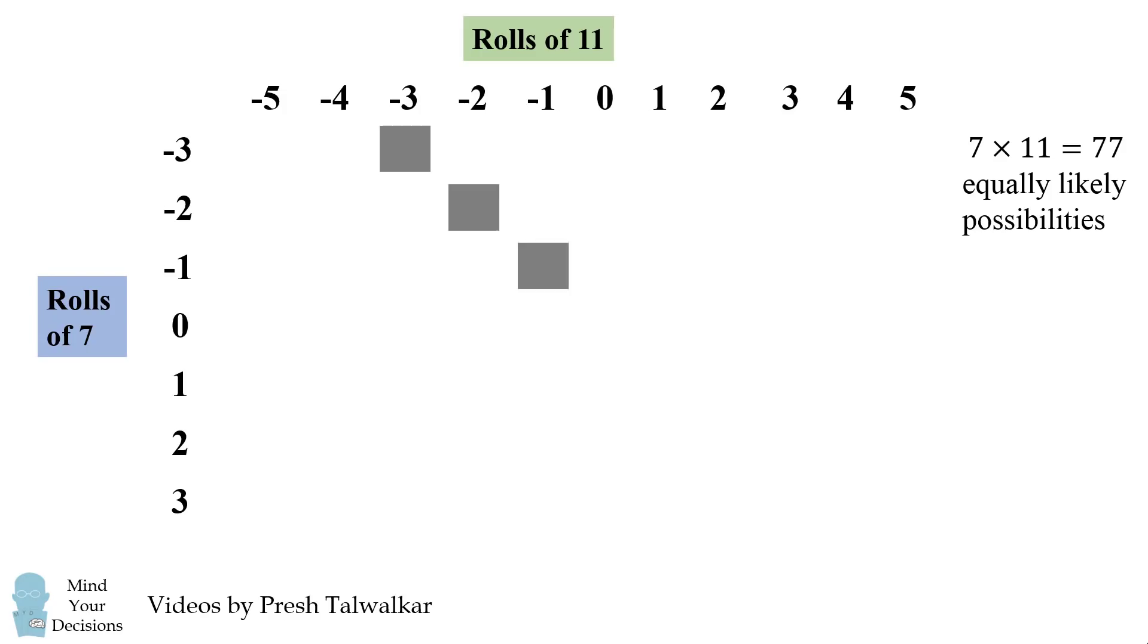Now of these, seven possibilities will be ties in which the game is a draw. So we're going to exclude this because the game does not end on these, you in fact roll again. This leaves 70 game-ending rolls.